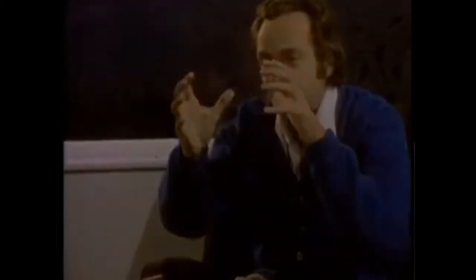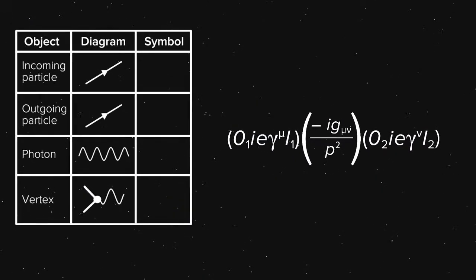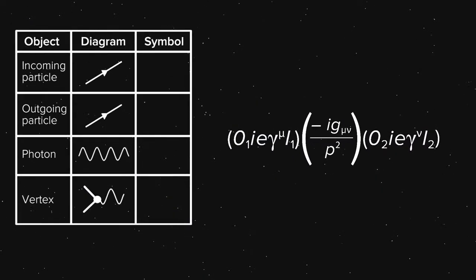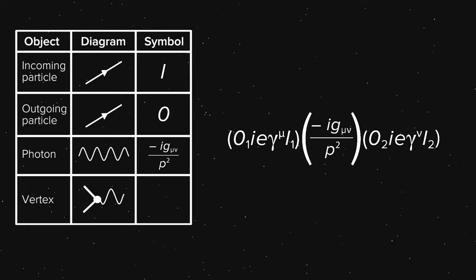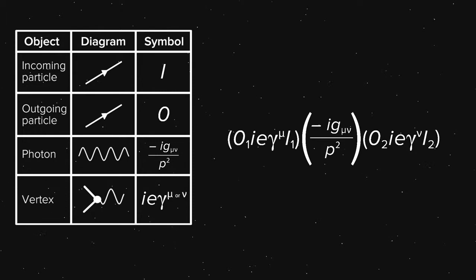Feynman's motivation to discover the diagrams came from the Manhattan Project. The applications of these diagrams were to find and calculate all possible outcomes of a particle interaction. To calculate and find values for these equations, you need to be a theoretical physicist. Some even said that if you can solve one of these equations, you technically count as a physicist.